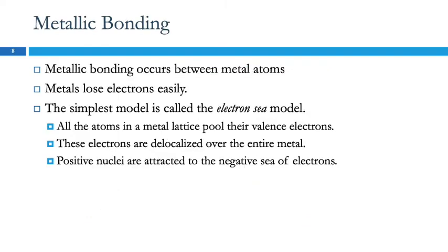Metallic bonding is very different. Metals lose electrons easily, but where are those electrons going to go if nobody wants to take them? Well, they're just going to kind of pool around the nuclei. We'll look more at this at the end of the chapter, but the electrons are delocalized over the entire piece of metal.